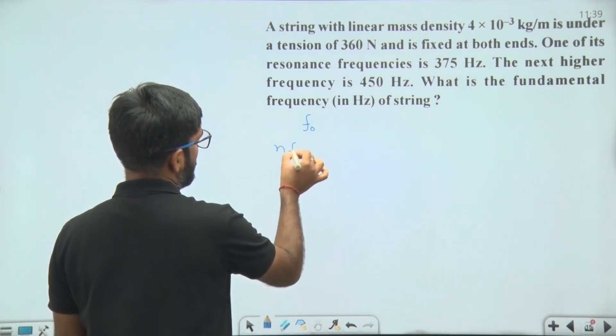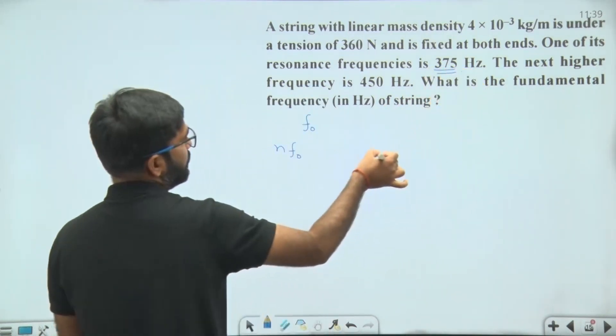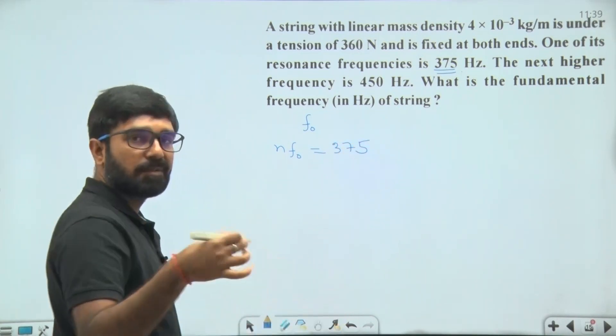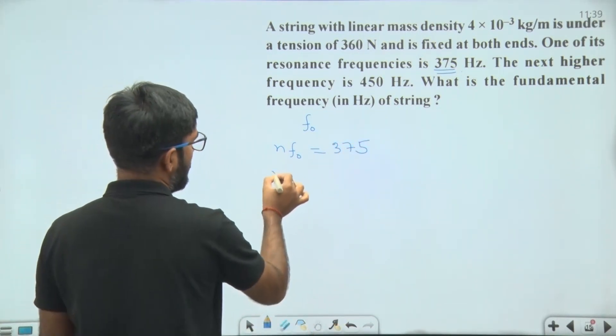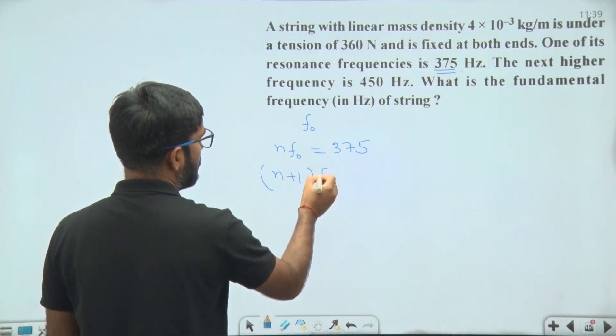Suppose this is the nth harmonic, then n × f0 = 375 Hz. The next higher frequency is the (n+1)th harmonic, so (n+1) × f0 = 450 Hz.